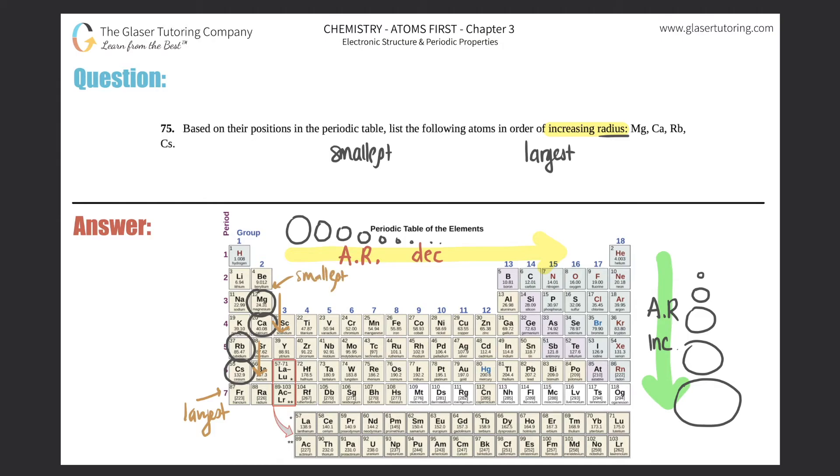Then comes calcium because it's right below magnesium. So magnesium is smaller than calcium, which is smaller than rubidium (Rb), which is smaller than cesium (Cs). Cesium is the largest because it's the most down on the periodic table; magnesium is the smallest because it's the most up.